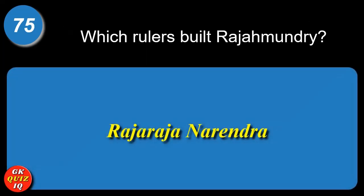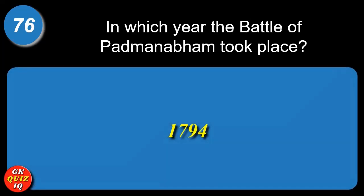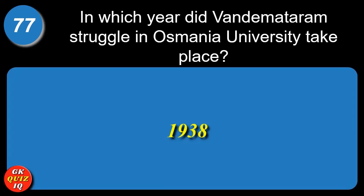Which rulers built Rajahmundry? Raja Raja Narendra. In which year did the battle of Padmanavan take place? 1794. In which year did the Vande Mataram struggle in Osmania University take place? 1938.